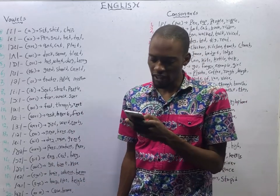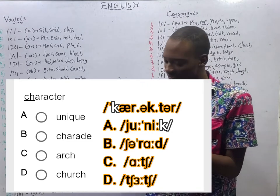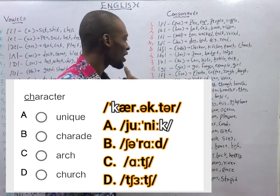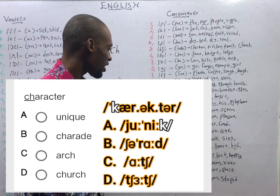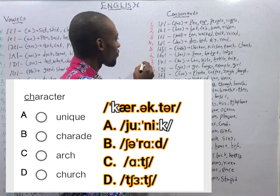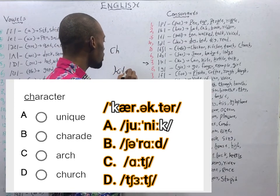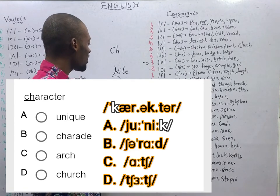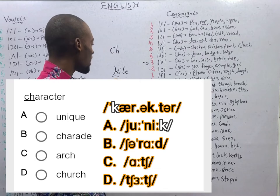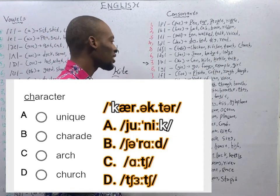The question we have here: we are given the word 'character,' and we are asked to look for the option that has the same sound as the CH in 'character.' The CH in 'character' is pronounced as K — it is not 'charata,' it is 'karakta.' This means the CH has the K sound, as in 'can,' as in 'kite,' as in 'kettle,' as in 'talk.' We have agreed that the CH in 'character' has the K sound.